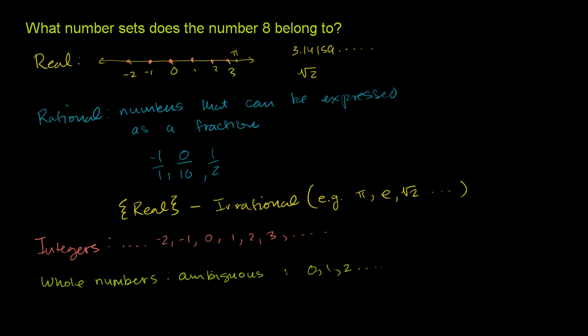Now, the last one to consider is natural numbers. And once again, this one is also ambiguous. And the reason why it's called natural numbers is these are numbers that you would actually encounter if you were to either try to order things or actually count things in nature.